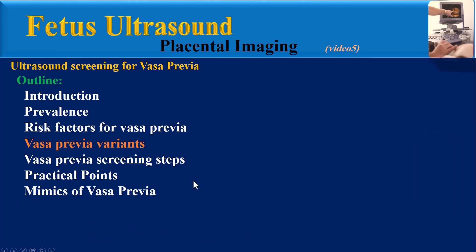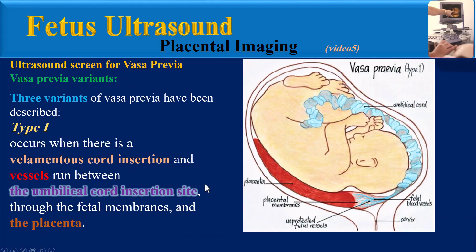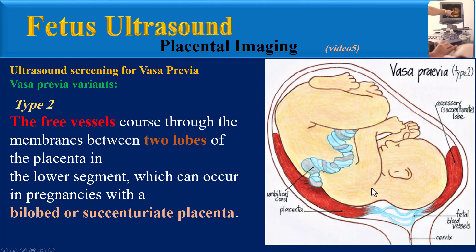Three variants of Vasa Previa have been described. Type 1 occurs when there is a velamentous cord insertion and vessels run between the umbilical cord insertion site through the fetal membranes and the placenta. Type 2: the free vessels course through the membranes between two lobes of the placenta in the lower segment, which can occur in pregnancies with a bilobed or succenturiate placenta.